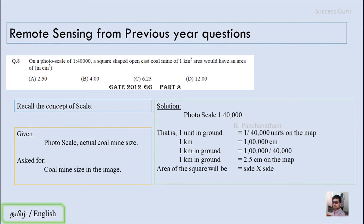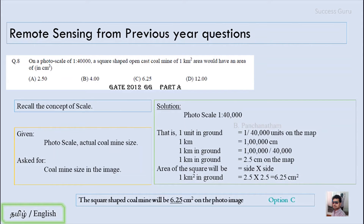The area is given by side into side — that is the formula for a square. So 1 kilometer square on the ground equals 2.5 into 2.5, which is 6.25 centimeter square. So the 1 kilometer square area of the coal mine will appear as 6.25 centimeter square on the map. The answer is option C.